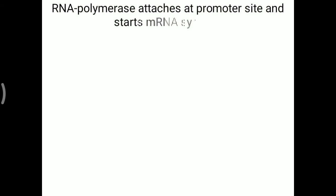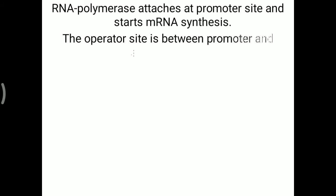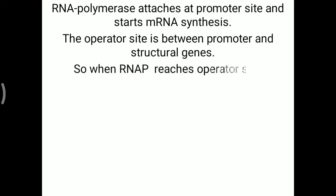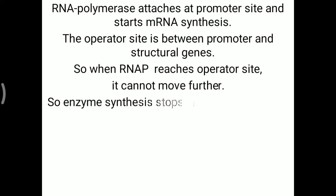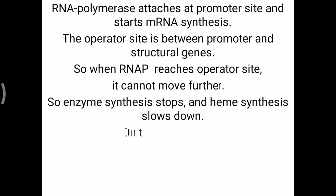Once RNA polymerase attaches at the promoter site and starts mRNA synthesis, it must pass through the operator site, which lies between the promoter and the structural gene. If the holorepressor is present at the operator site, the RNA polymerase cannot move further, so enzyme synthesis stops and heme synthesis slows down.